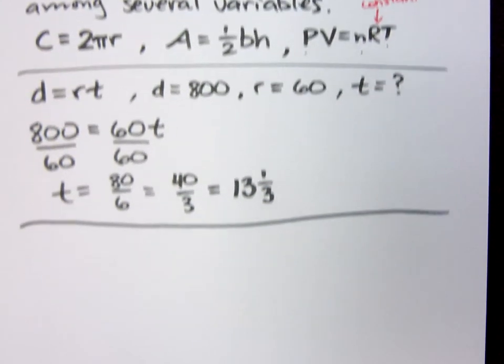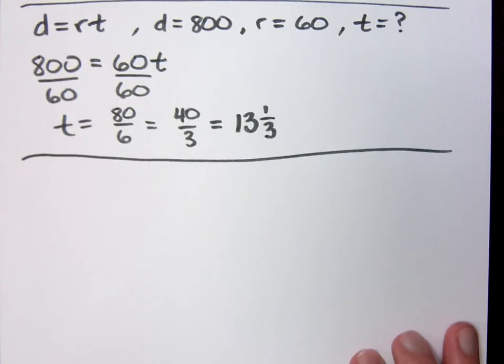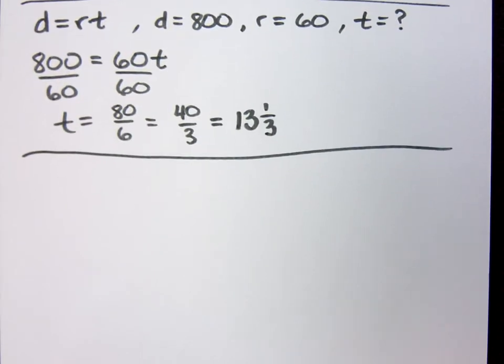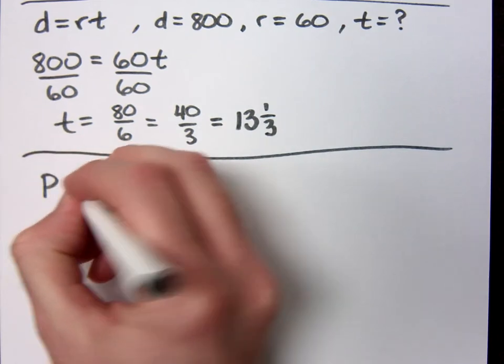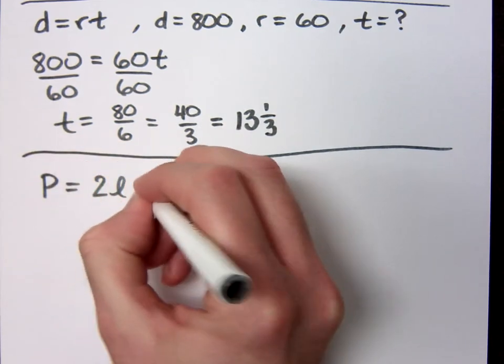Do you guys remember the formula for perimeter? Because I know we have some word problems that deal with perimeter, perimeter of a rectangle in particular. P=2l+2w, twice the length plus twice the width, right?